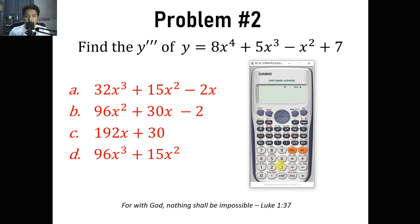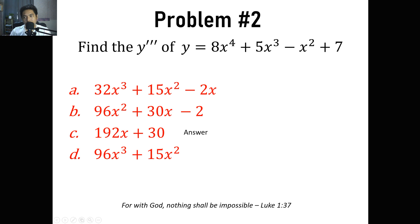Now it's time to go to the choices. Since this is a third derivative, we evaluate with a value of x. Let's try letter C: 192 alpha x plus 30 at x equals 0.1 gives 49.2. Dividing that answer by the stored value in D should equal 1. So the answer for this problem should be letter C based on our calculator technique.